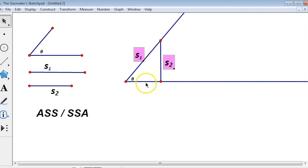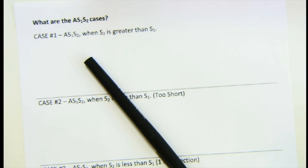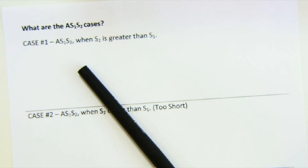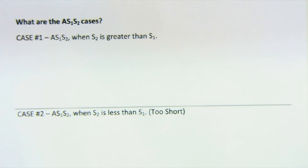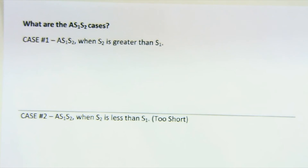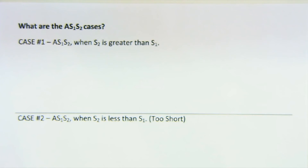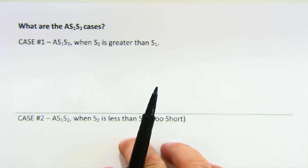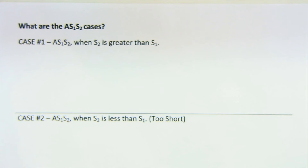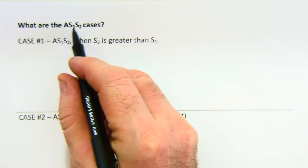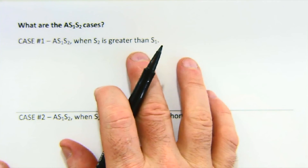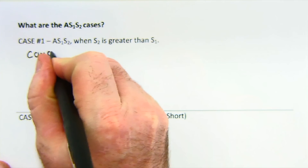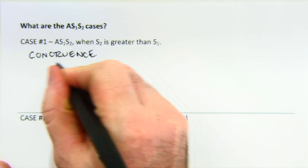Now let's go to pen and paper to summarize. There are four different cases of angle-side-side, and this is why most geometry textbooks avoid this topic. But we need to know this to do the law of sines, so we have to cover it. The first case: angle-side-side where side two is greater than side one — this is a congruence relationship. It will always produce a congruence.